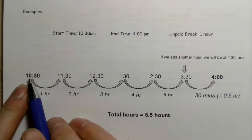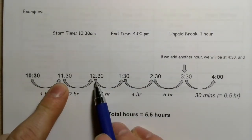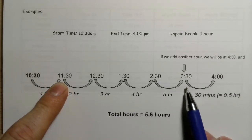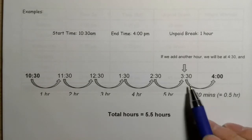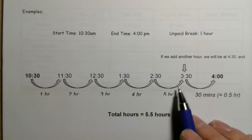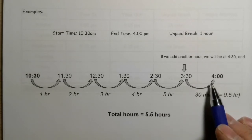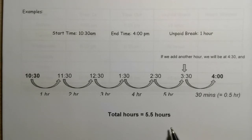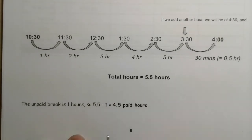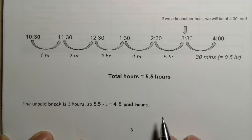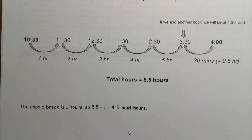Starting at 10:30 — one hour to 11:30, two hours to 12:30, three to 1:30, four to 2:30, five to 3:30. And then that's going to be half of an hour to reach 4:00. So that's five and a half hours total. But there was a one-hour unpaid break, so we're going to take the five and a half hours and subtract one. We're actually only going to get paid for four and a half hours.